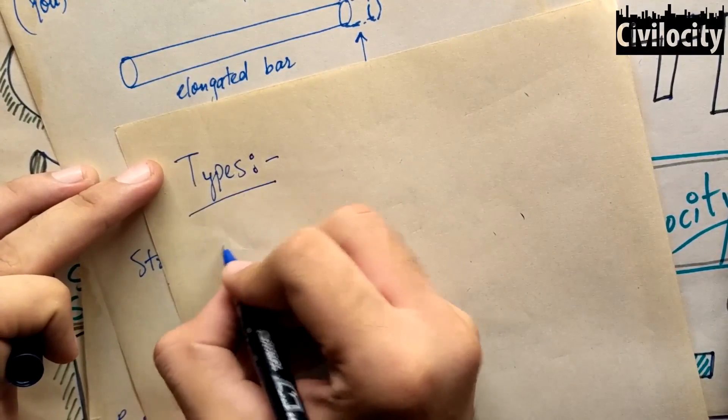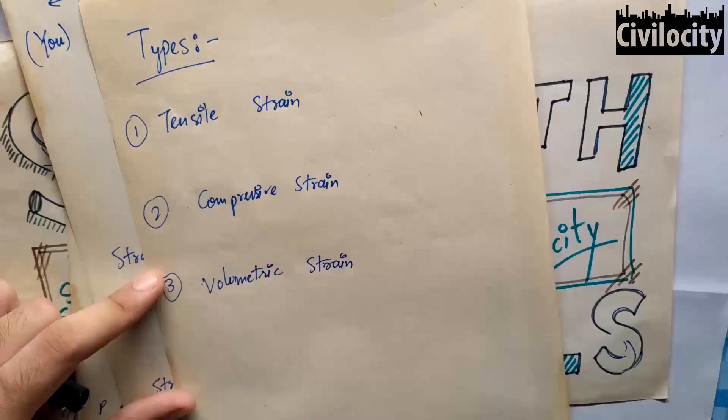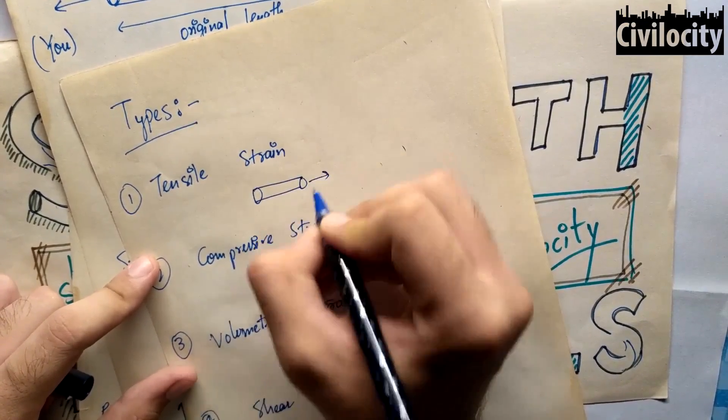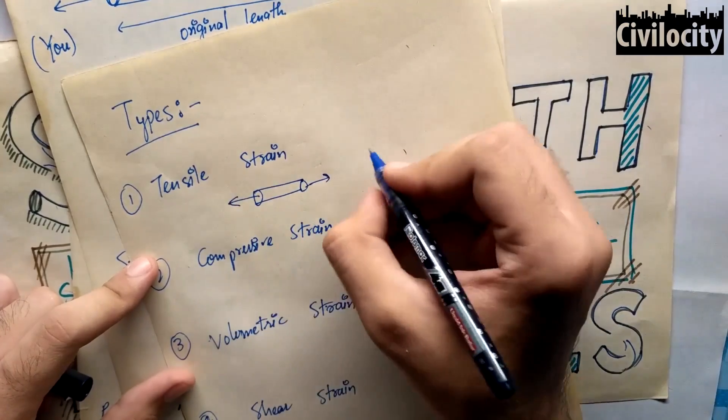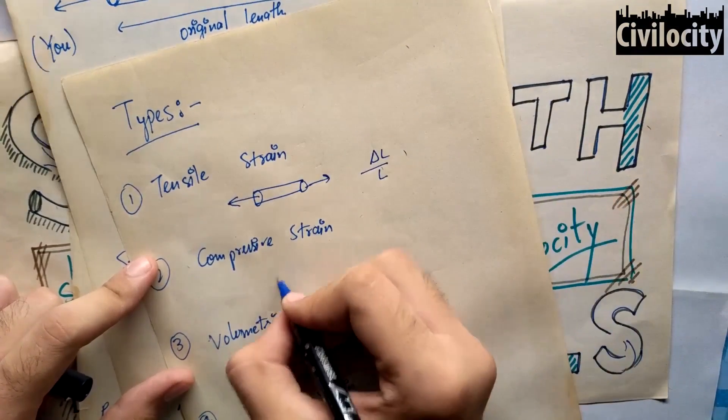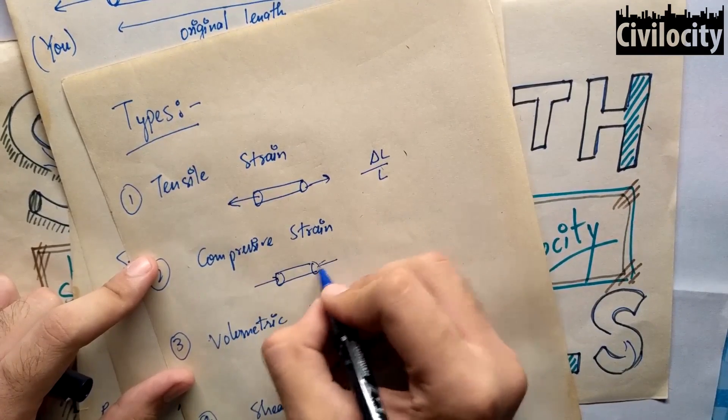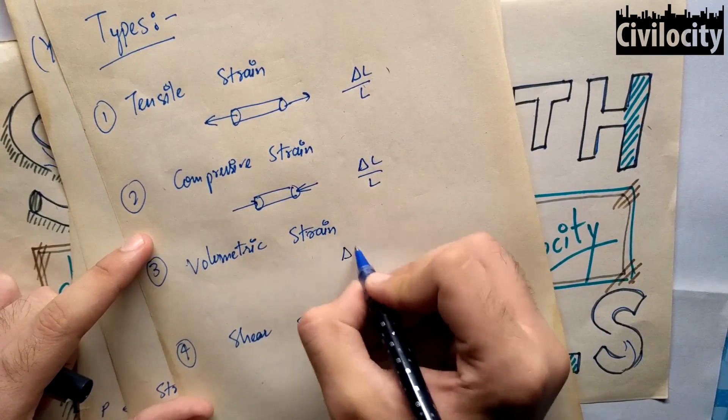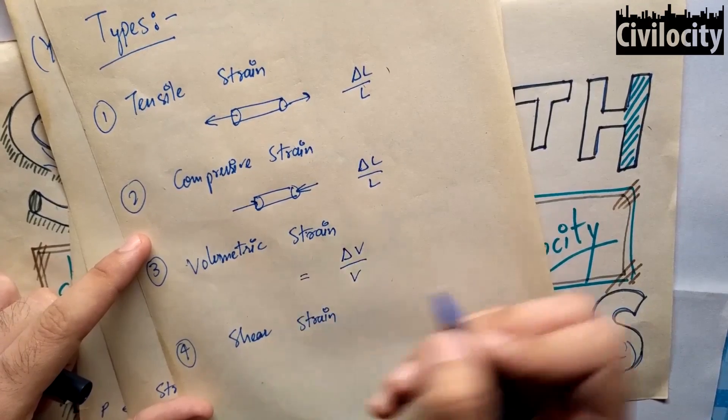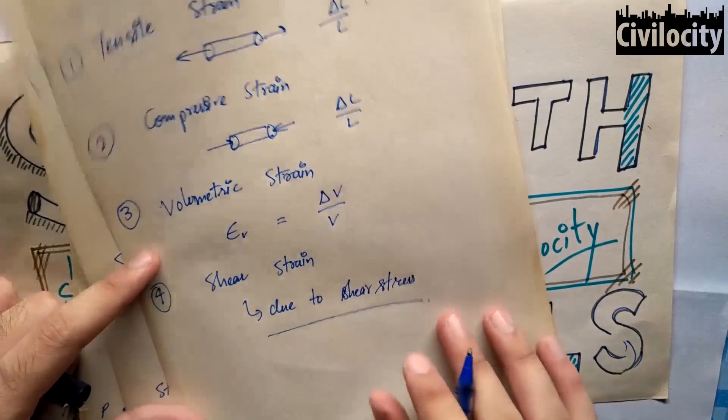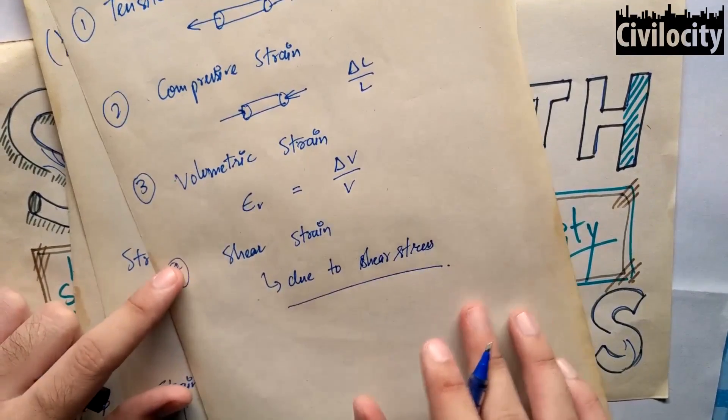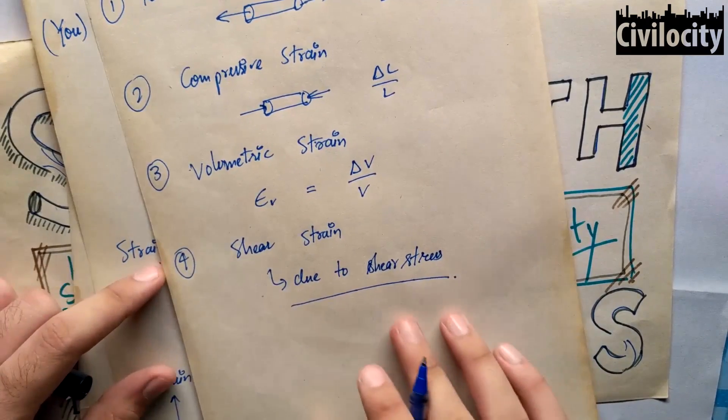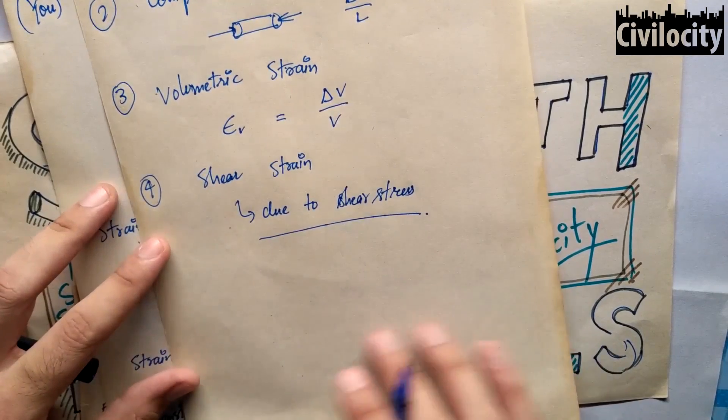Strain can be of four types: tensile strain, compressive strain, volumetric strain, and shear strain. In your case, it was tensile strain because you were stretching the bar, so change in length due to tension divided by total length is called tensile strain. Similarly with compressive strain, if you were compressing the bar, the change in shortening of length due to compression divided by total length gives compressive strain. Change in volume divided by total volume gives volumetric strain. The strain produced by shear stress is known as shear strain. Right now, you just need to know what are stresses and strains and the basics.